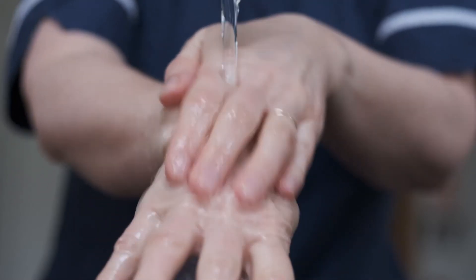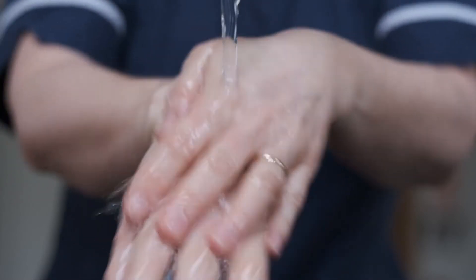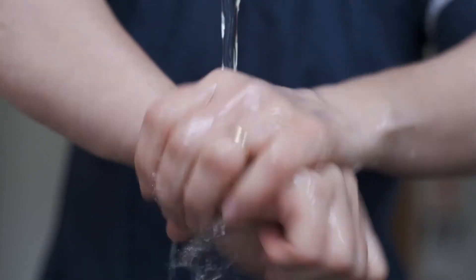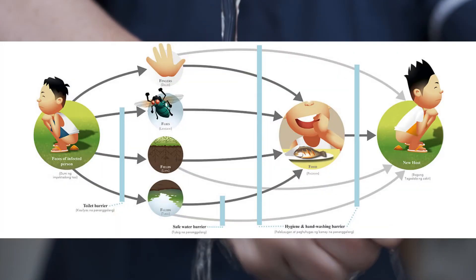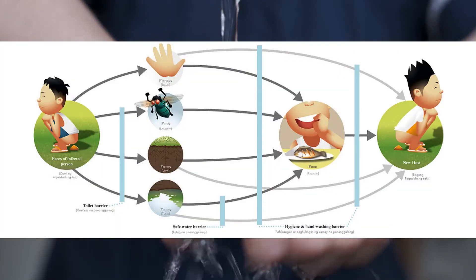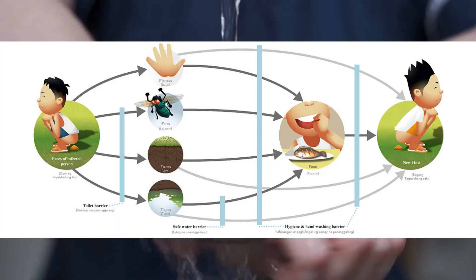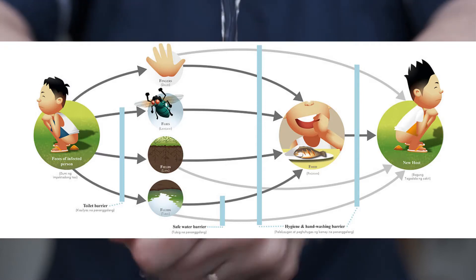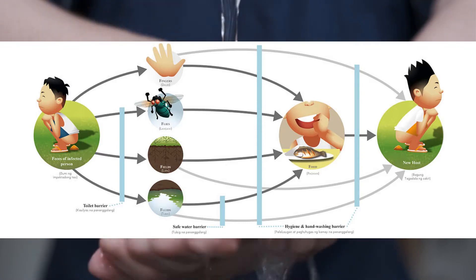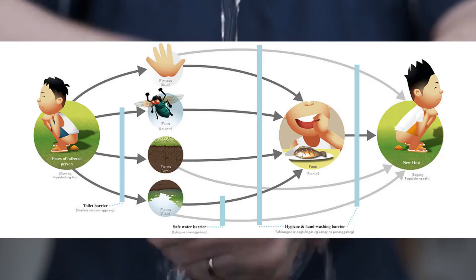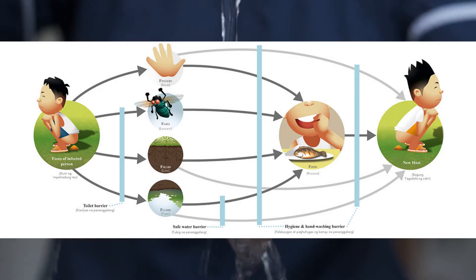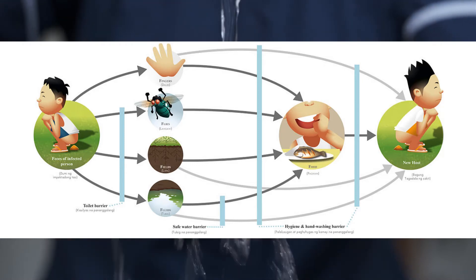There is one major route of infection and reinfection for humans: the fecal-oral route. It involves contact with feces, generally with hands, and then contact with the nose and mouth region.